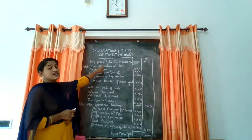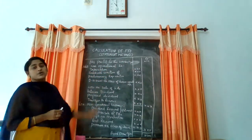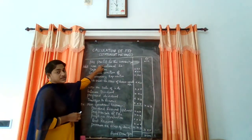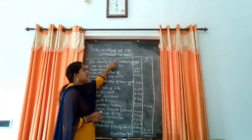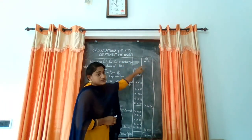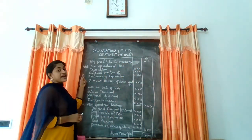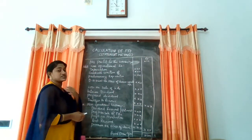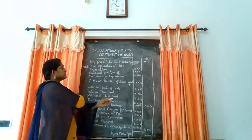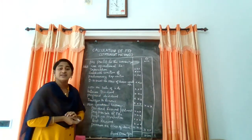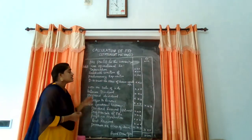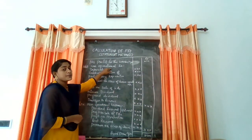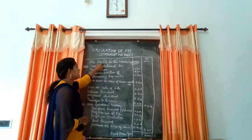Net profit is already debited in the Profit and Loss account. Then some items are added along with the net profit. These are the non-operational expenses. Non-operational expenses are added along with the net profit.